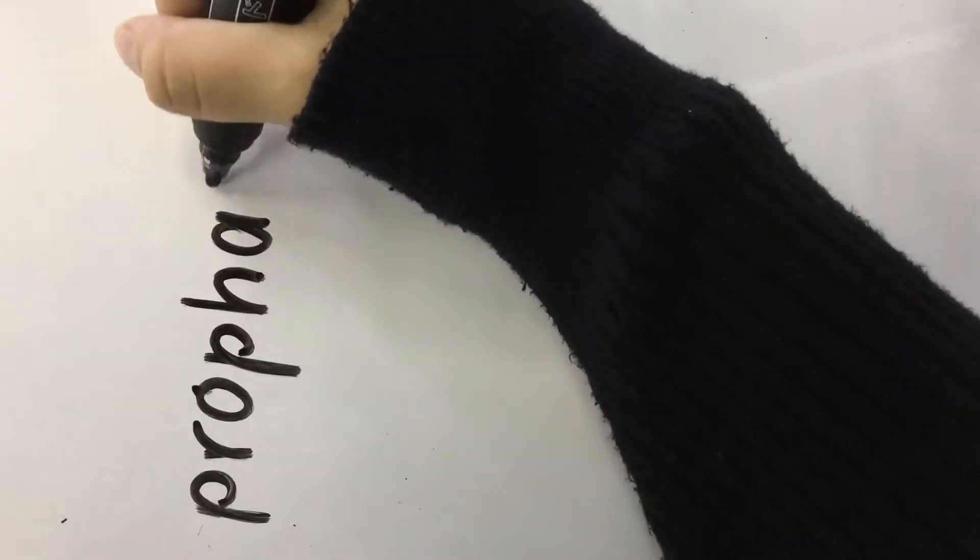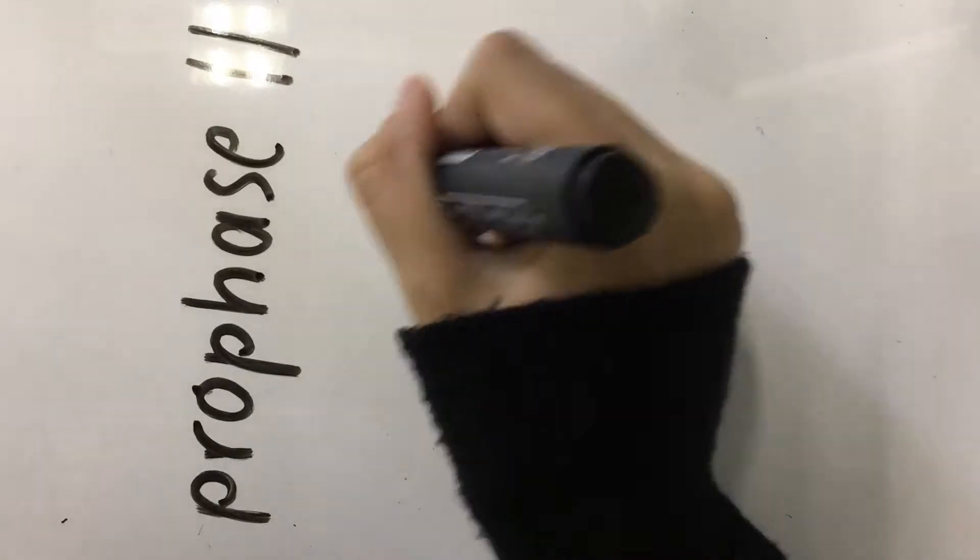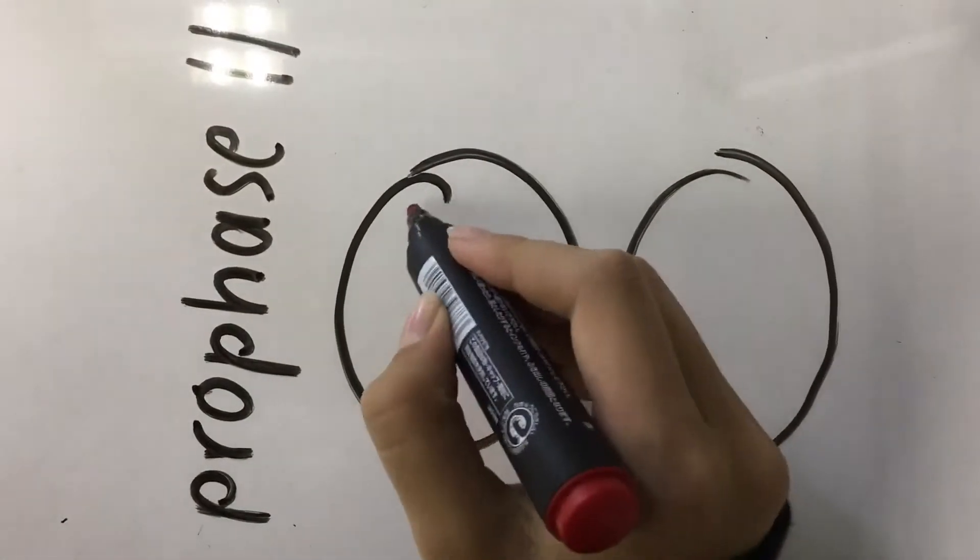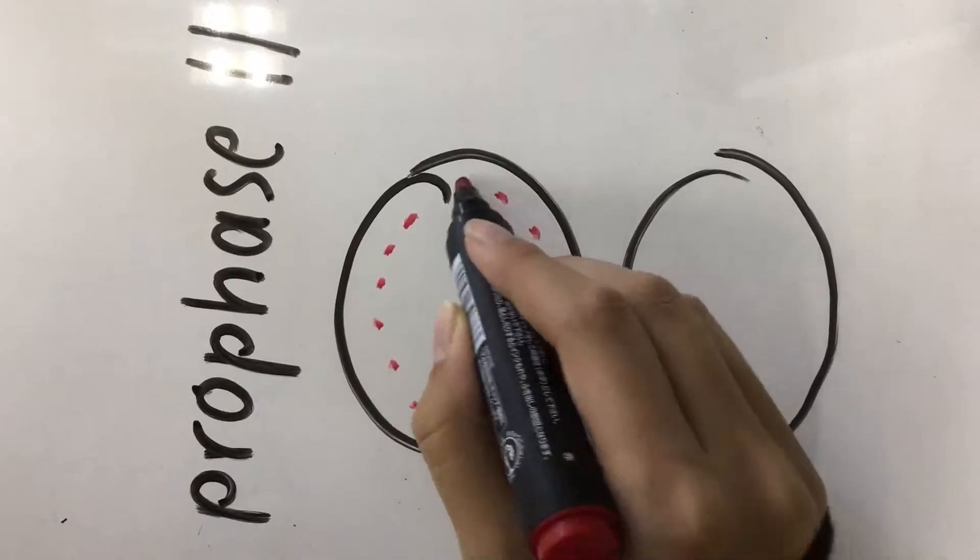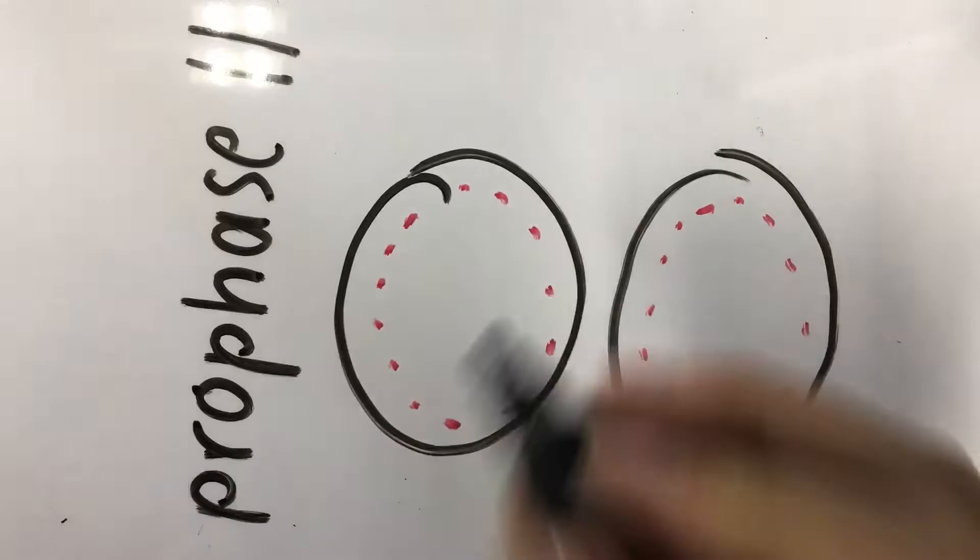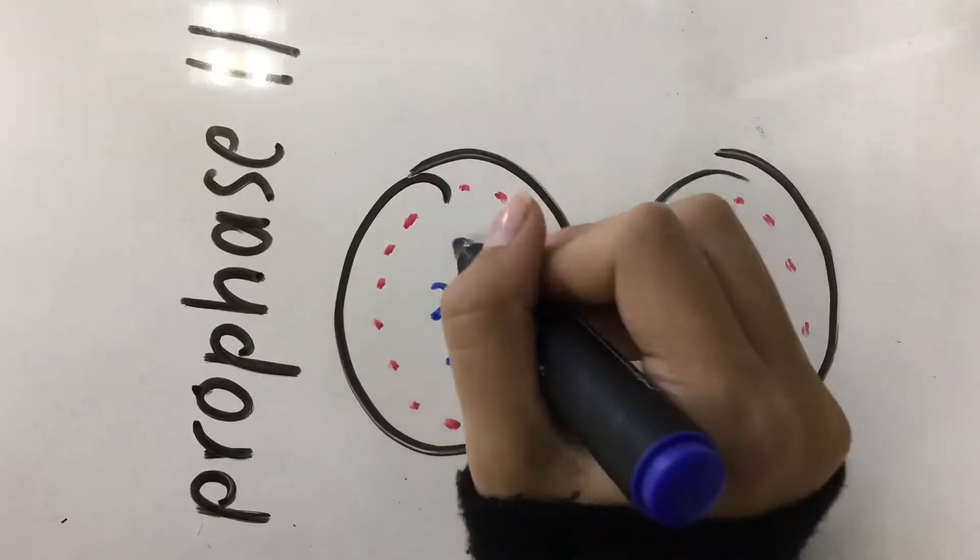Now we're left with two daughter cells and prophase 2 begins to occur. Within these daughter cells, chromosomes are bunched within the center and protein ropes are produced, called microtubules.